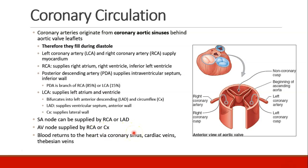All of the blood that the coronary arteries supply to the heart is then drained back into the heart, either through the coronary sinus, the cardiac veins, or the Thebesian veins. This blood is returned to the circulation on the venous side to be pumped to the lungs and re-oxygenated.